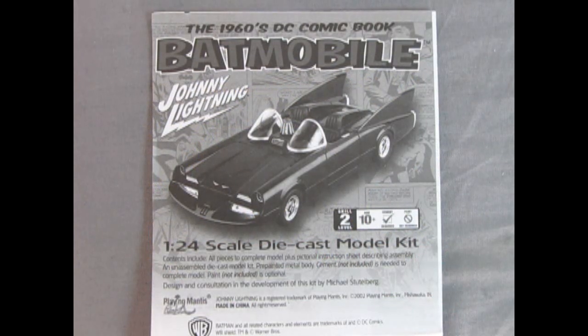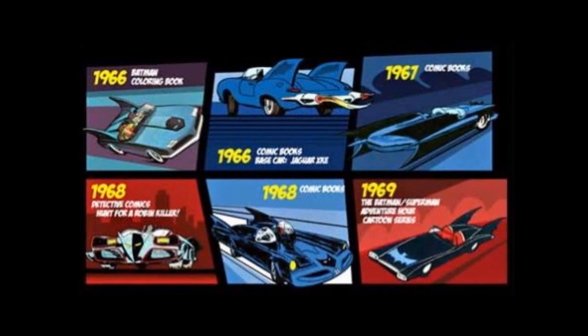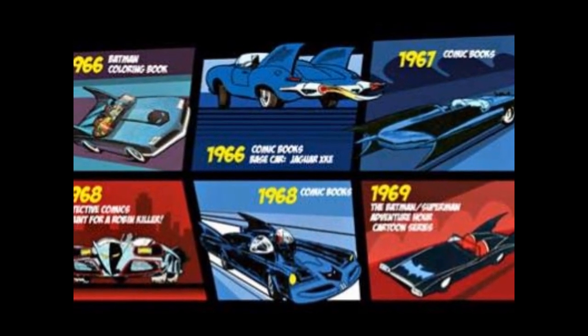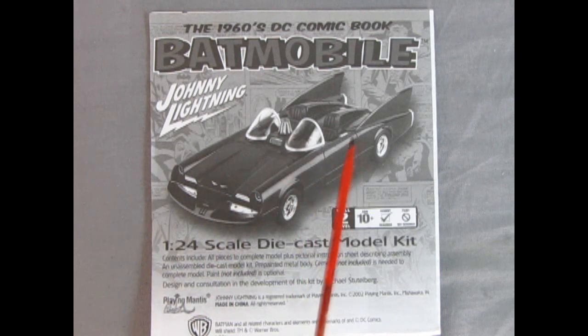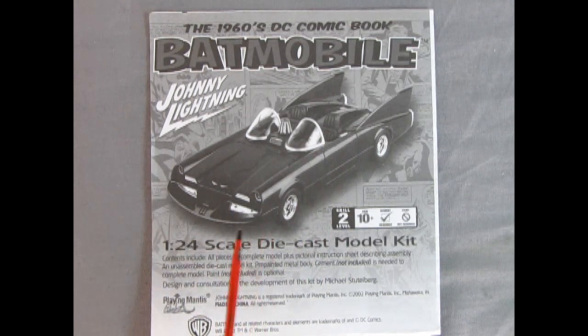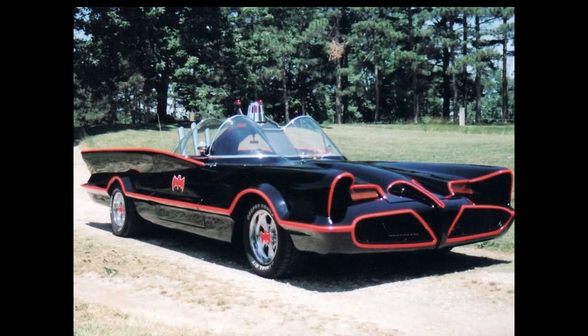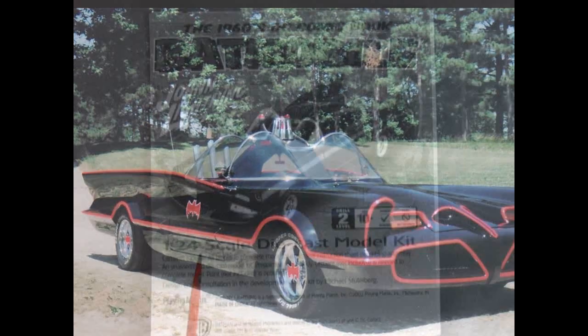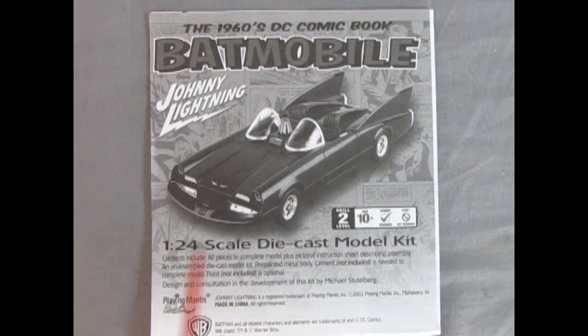So in my research of the 1960s DC comic book Batmobile, I actually found out that there were many, many different versions of the Batmobile in the 1960s comic books. This one is from 1968 and is the closest you would get to the 1966 TV Batmobile. And there were a few others after this one as well.